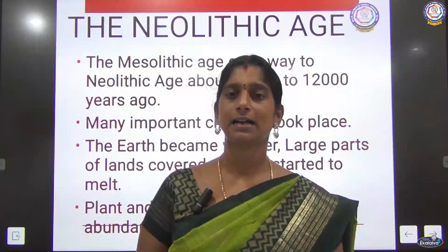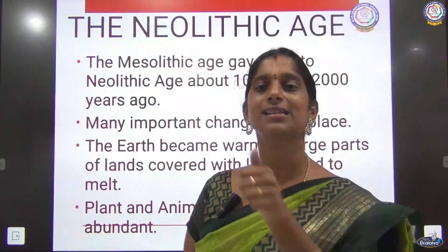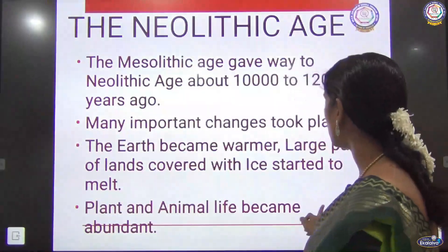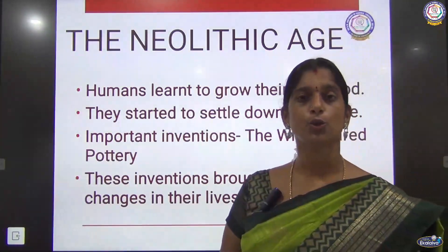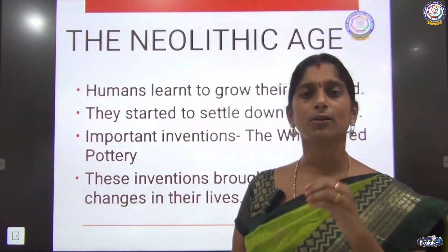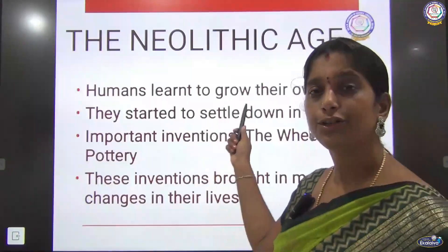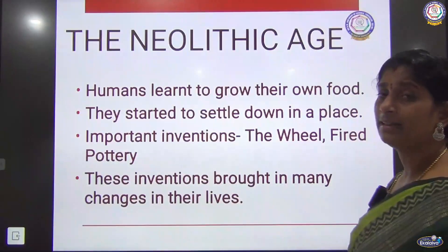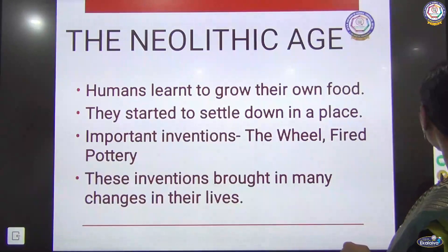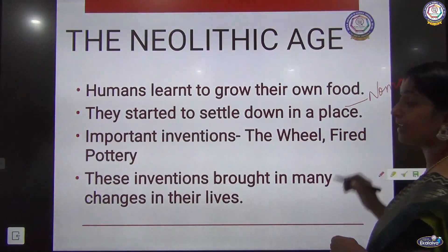They understood that not all animals are harmful — some animals are even friendly with human beings. Animals and plants started to increase during this new stone age. Then humans learned to grow their own food; they understood they can eat grains. Not only animal meat or fruits would be food — they could also eat grains. They understood this during the new stone age, and then they started to settle down in a place instead of living the nomadic life of moving from place to place.